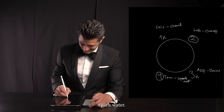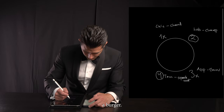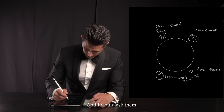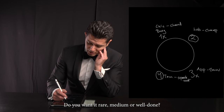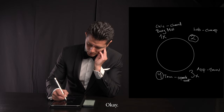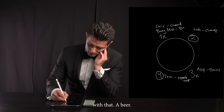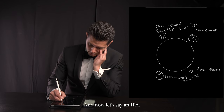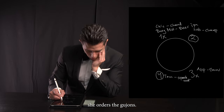For the main course, the first person has a burger. I would ask them how they would like it cooked — rare, medium, or well done — and they say medium well, so 'MW' is short for medium well. They would also like a beer with that, an IPA.